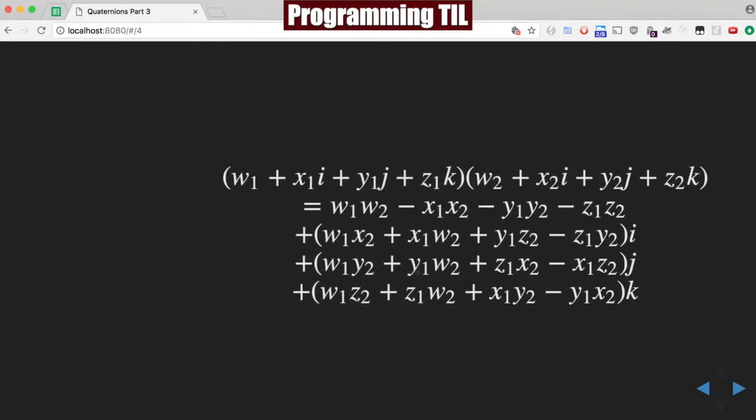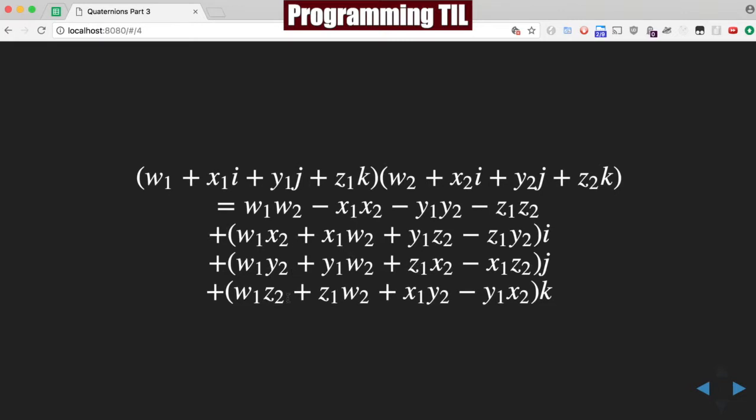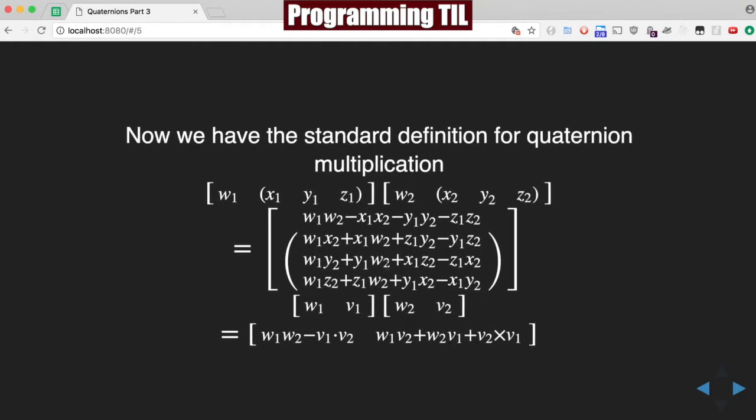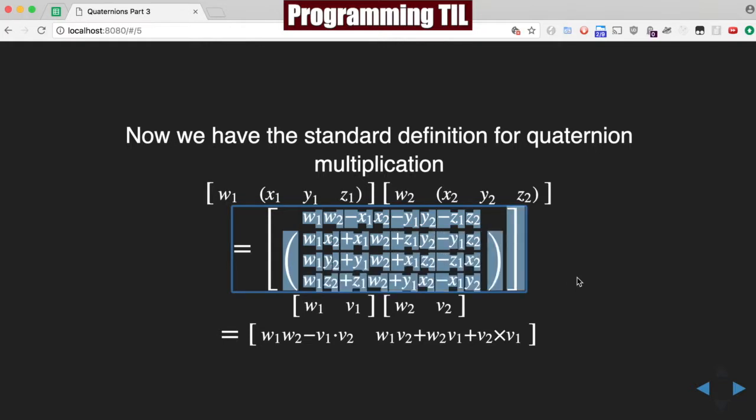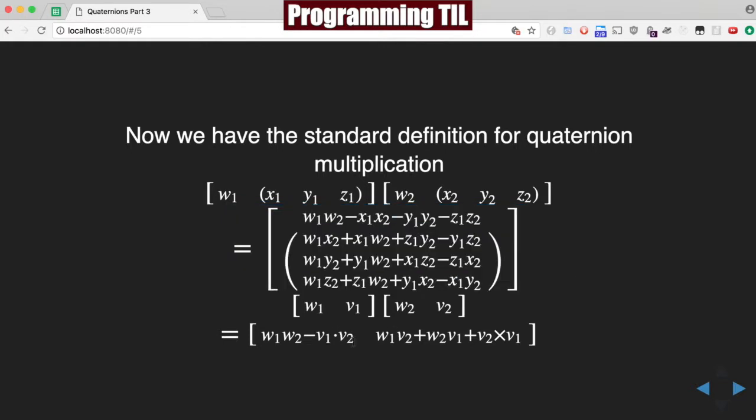We end up with this entire thing here. Each of these are sub-portions of the overall answer. But that ultimately leads to the standard definition for quaternion multiplication, which in the longhand format looks like thus. And on the shorthand version, it is down here, with the dot product and the cross product here. Note that it's V2 cross V1. That'll be something to note for later in the episode. Give you a second there to look, and we'll move on.